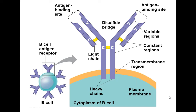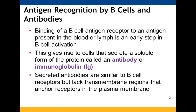The heavy chains are connected to the B-cell through the cell membrane, with antigen-binding sites in the variable region. When an antigen in the blood or lymph binds to the B-cell receptor, it stimulates the cell to make copies that generate antibodies — proteins that look like the B-cell receptor but are not membrane-bound, so they can go out and attack pathogens directly.